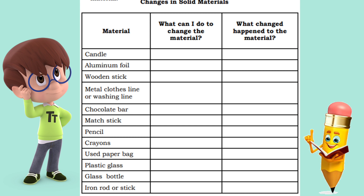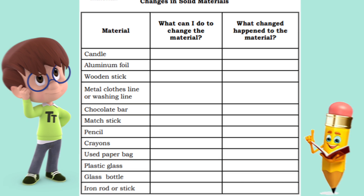Number one, try to bend, cut, hammer, or press each of the materials using the table. Number two, write in column two what you can do to change the material. Number three, write in column three to describe the changes that occurred in the material.